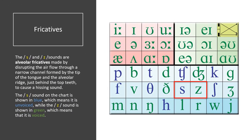Fricatives. The S and Z sounds are alveolar fricatives, made by disrupting the airflow through a narrow channel formed by the tip of the tongue and the alveolar ridge, just behind the top teeth, to cause a hissing sound. The S sound on the chart is shown in blue, which means it is unvoiced, while the Z sound is shown in green, which means that it is voiced.